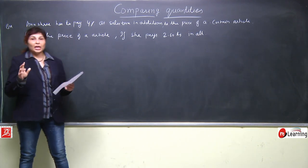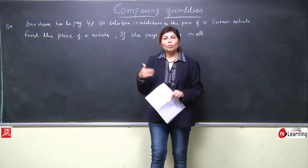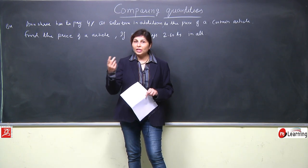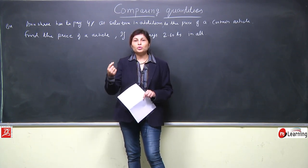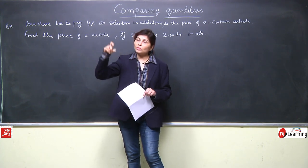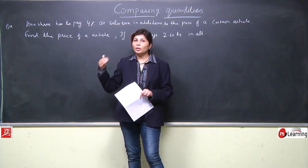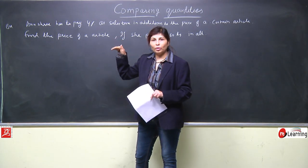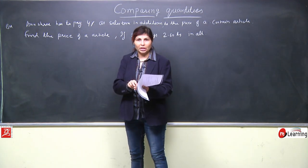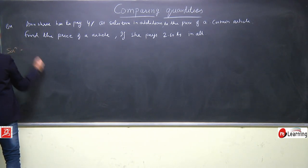If she pays 2.60 rupees in all, the tax is already included. So Anushree has to pay. She is purchasing something and paying 4 percent as tax. But we don't know what the article's price is. So first we will assume the article price as either x or 100.